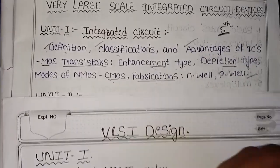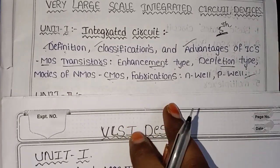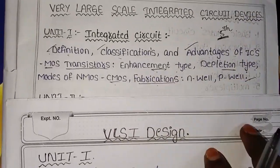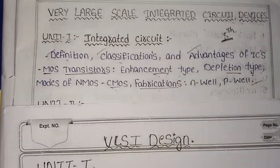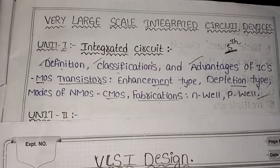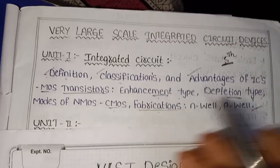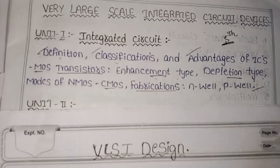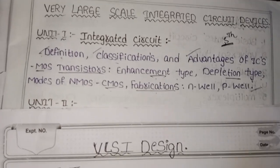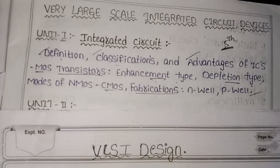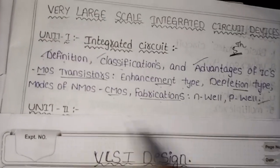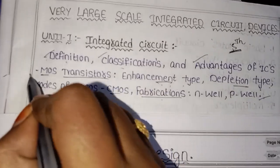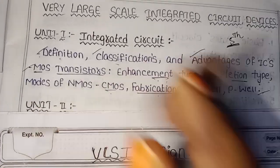The Enhancement Type is sub-divided and the Depletion Type also has two parts. Under Enhancement, there are two types: P-type and N-type. Under Depletion, there are also two types: P-type and N-type. Focus on these definitions for the 5-mark questions.